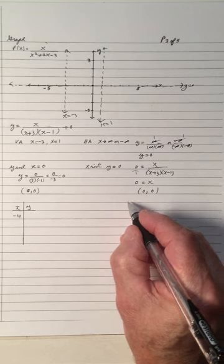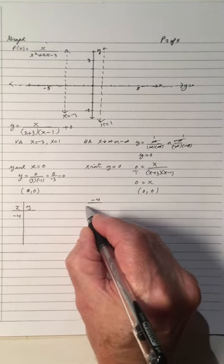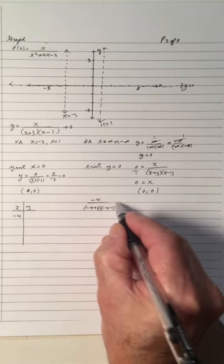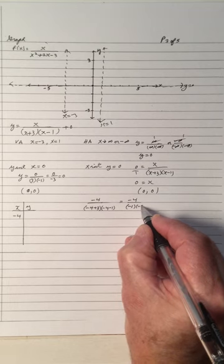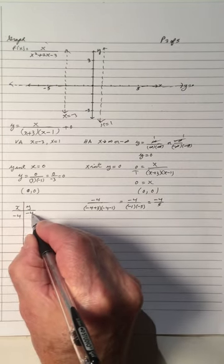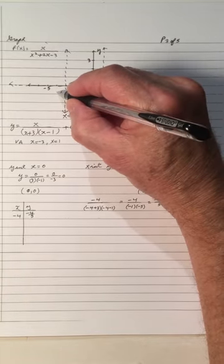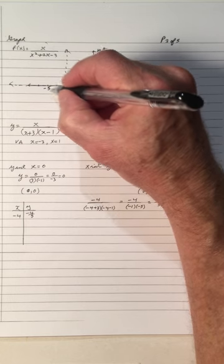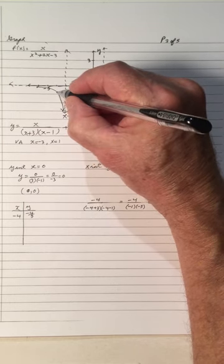Let's work out when x is negative 4. We get negative 4 over (negative 4 plus 3)(negative 4 minus 1), which is negative 4 over (negative 1)(negative 5), giving negative 4 over 5. So negative 4 gives y equals negative 4/5, roughly right here. As x goes to negative infinity, the graph is going through here and never cuts through the vertical asymptote.